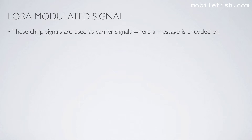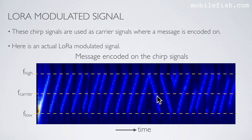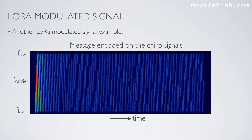These chirp signals are used as carrier signals where a message is encoded on. Here is an actual LoRa modulated signal. This is the start of the message and here is the encoded message. You can easily recognize the start of a message — it is a number of up chirps followed by two down chirps. Here is another LoRa modulated signal example: a number of up chirps followed by two down chirps, and here is the encoded message.